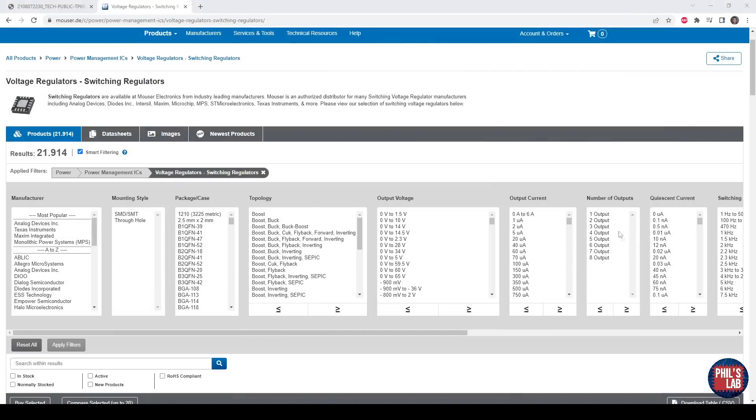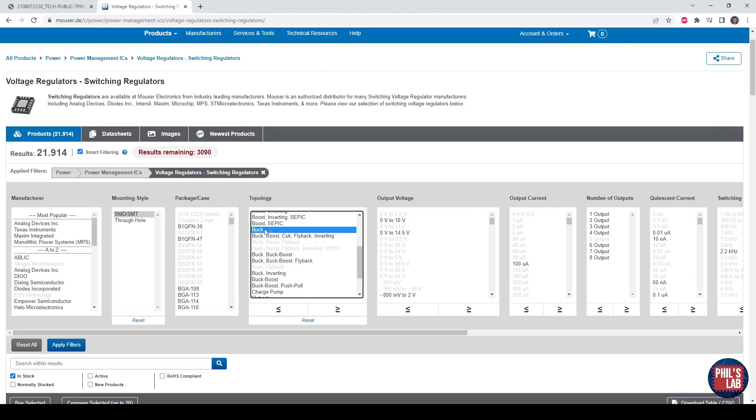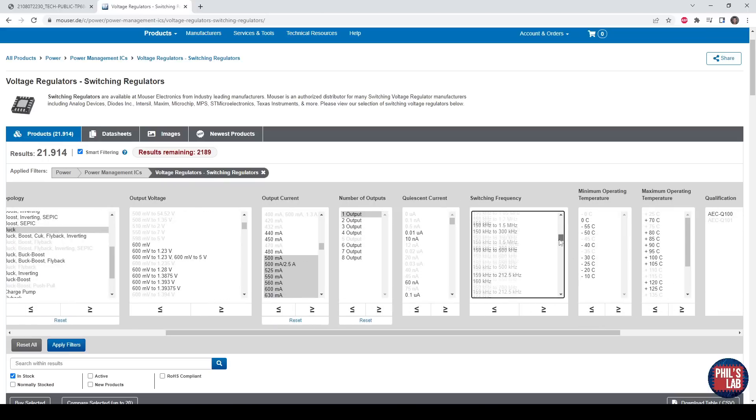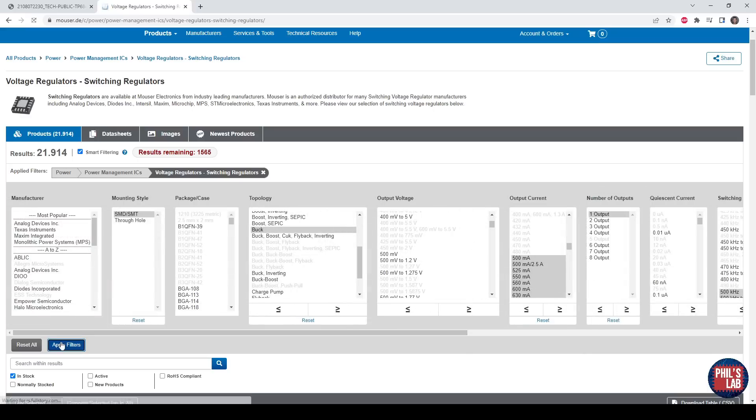Once you have the requirements in place you can go to your preferred distributor's website, mine happens to be Mouser, and then I went to the power management ICs voltage regulators and switching regulator section. I will click in stock, I prefer SMD components, package case I'm not really worried about, but I would like to choose a buck converter, and here I can choose my output voltage range so 3.3 volts should be included, and I can use that to exclude. Output current, I want something around 500 milliamps, I'll just select 500 milliamps and larger. I just want one output, and switching frequency, which will be important later, I want to be fairly high, so at least 500 kilohertz, because a larger switching frequency reduces the size of our external components, reduces the size of inductors and capacitors we need. Once you're done, don't forget to select the output voltage, click apply filters.